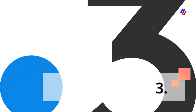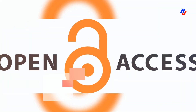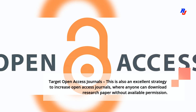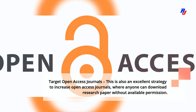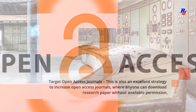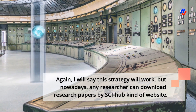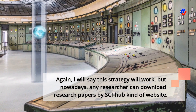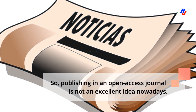Third point — target open access journals. This is also an excellent strategy to increase visibility, as open access journals allow anyone to download research papers without needing special permission. However, nowadays any researcher can download research papers through sites like Sci-Hub, so publishing in an open access journal is not as critical a strategy as it once was.